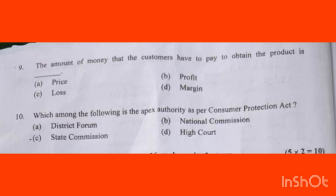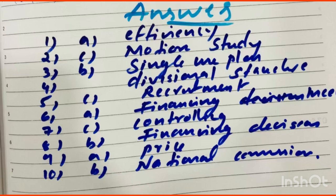Here is a summary of all the right answers: Efficiency, Motion Study, Single Use Plan, Divisional Structure, Recruitment, Financial Incentives, Controlling, Financing Decision, Price, and National Commission.